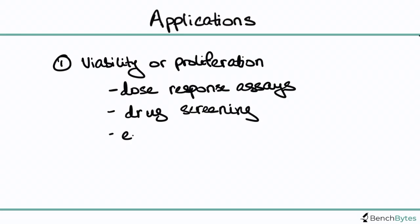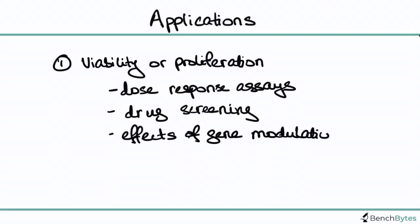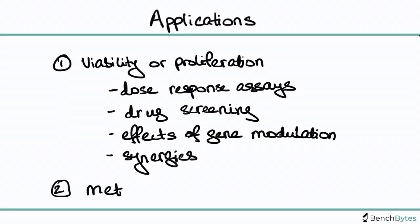You can also look at drug screening — for example, comparing the effect of one drug to another. You can look at effects of gene modulation, such as whether a knockdown or overexpression of a gene changes how proliferative your cells are. You can also look at synergies between drugs — does adding two drugs make cells die faster? And in some cases, much more rarely, you can look at the metabolic effects of certain molecules or compounds.